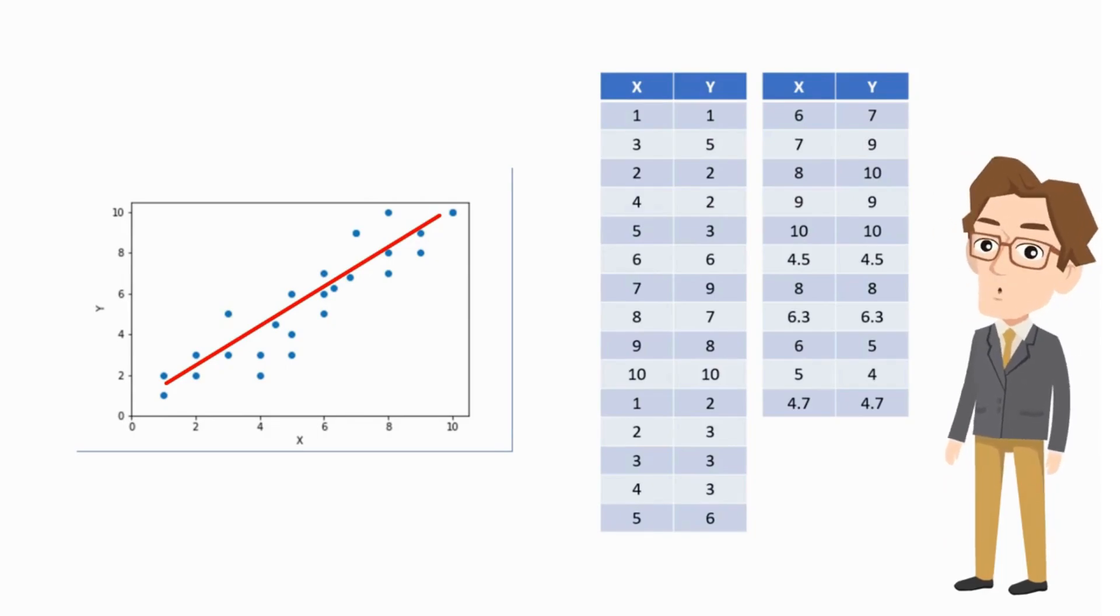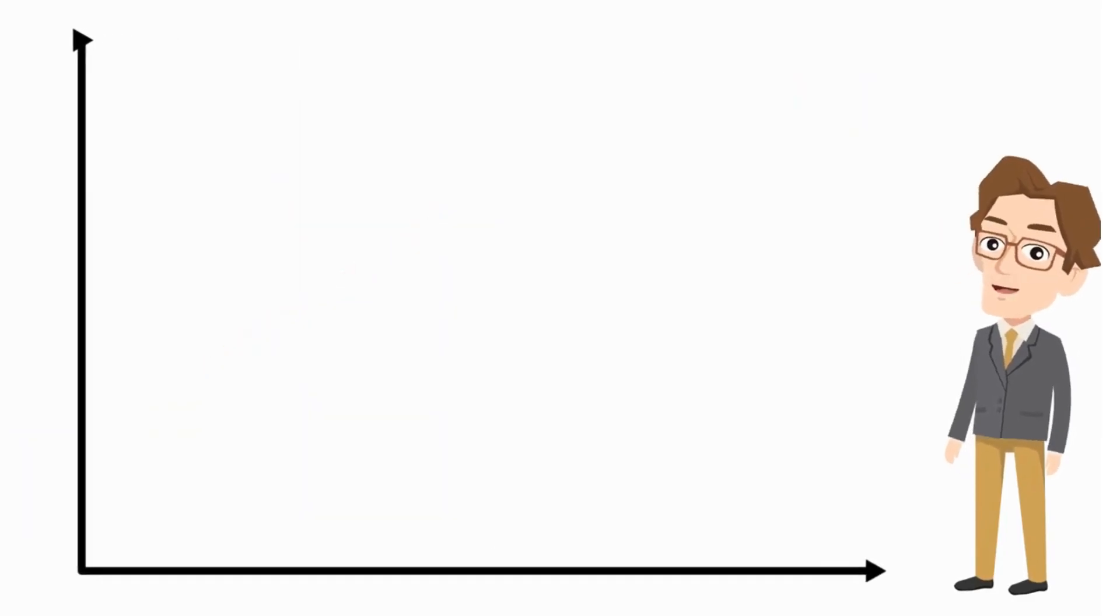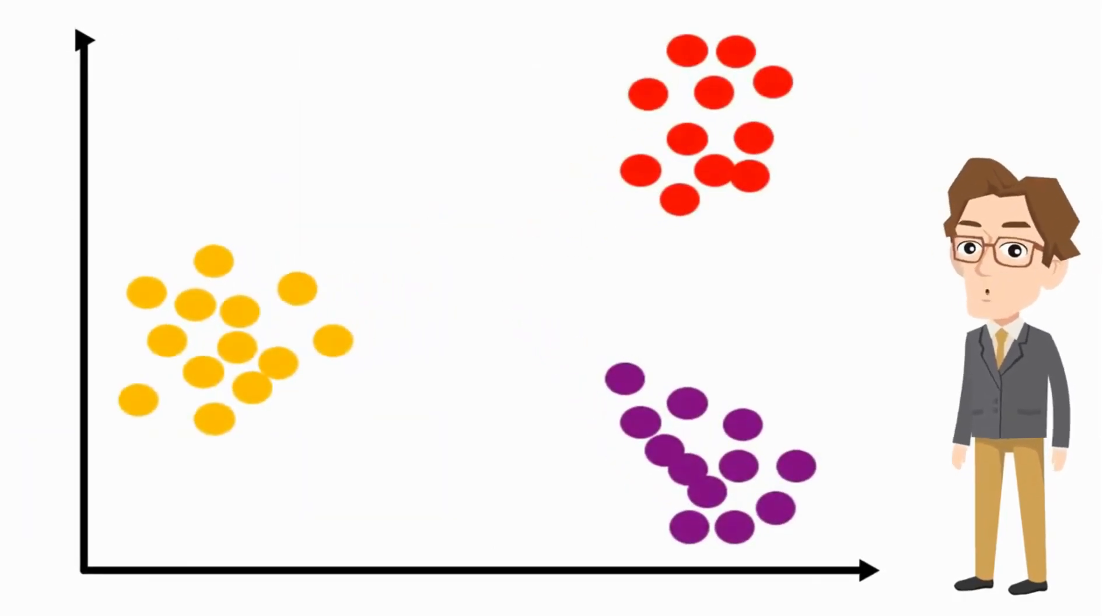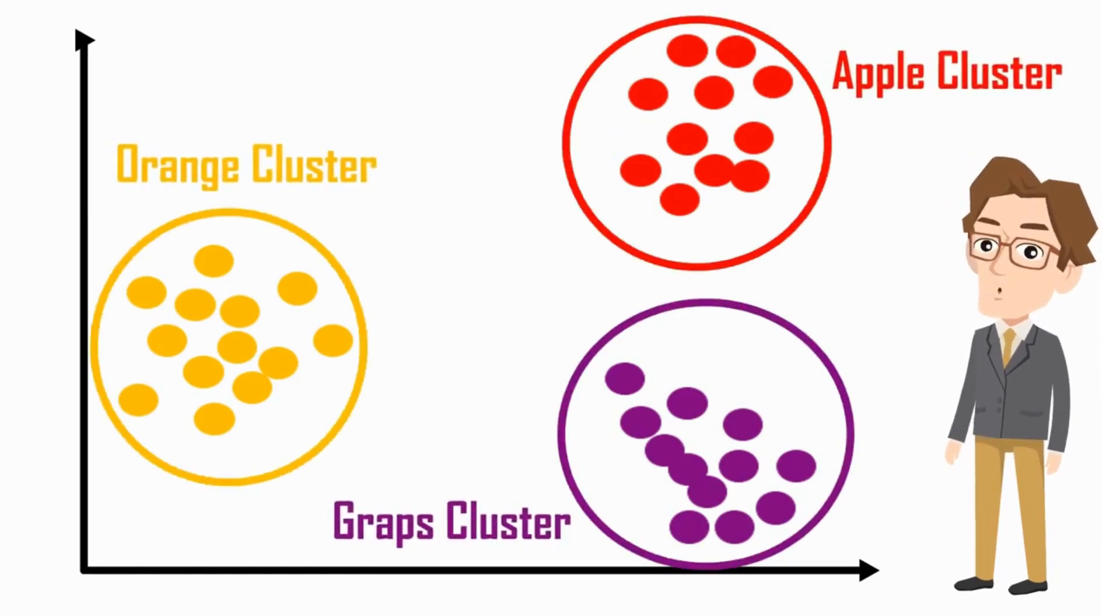But in classification problem we will separate our data and make classes and our data should look like this. In this example, based on values of x we make clusters for fruits target classes. There could be two or more than two.